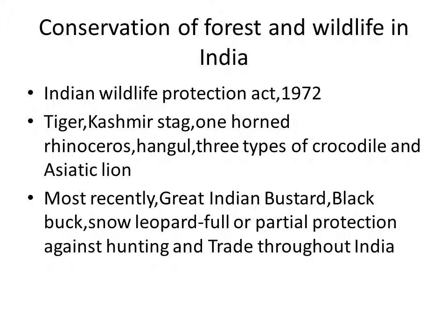In the 1960s and 1970s, conservationists demanded a national wildlife protection program. The Indian Wildlife Protection Act was implemented in 1972 with various provisions for protecting habitats. An all-India list of protected species was also published. The thrust of the program was towards protecting remaining populations of certain endangered species by banning hunting, giving legal protection to their habitats, and restricting trade in wildlife.